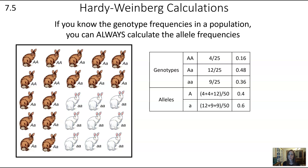Keep in mind that each individual has two alleles, so in a population of 25, there are a total of 50 alleles. Eight of those big A alleles are in the homozygous dominant bunnies — for each of those four homozygous dominant bunnies, we count the big A allele twice. We then count one big A allele for each heterozygous bunny. We do the same with the little a allele: count 12 from the heterozygous, and count the homozygous recessive bunnies twice.